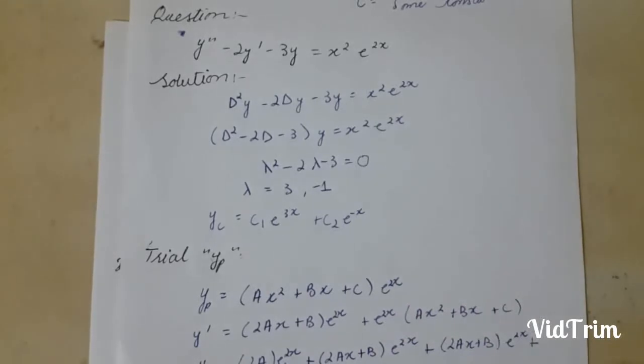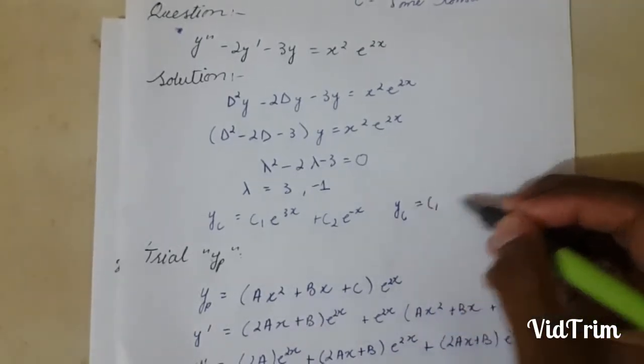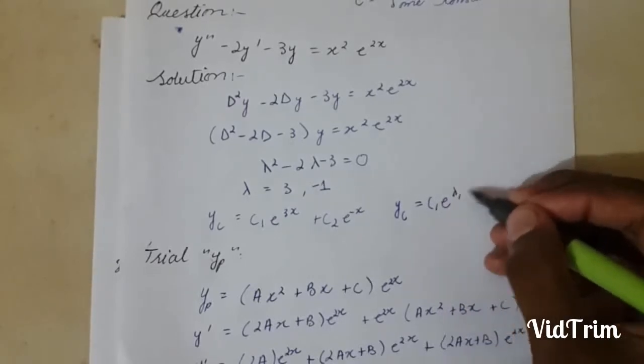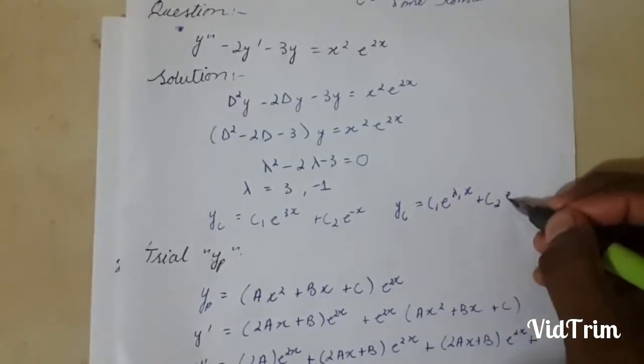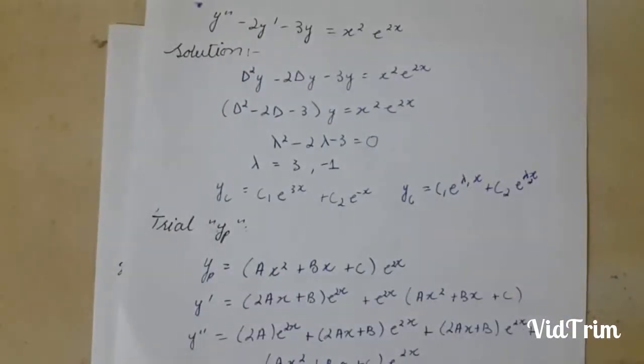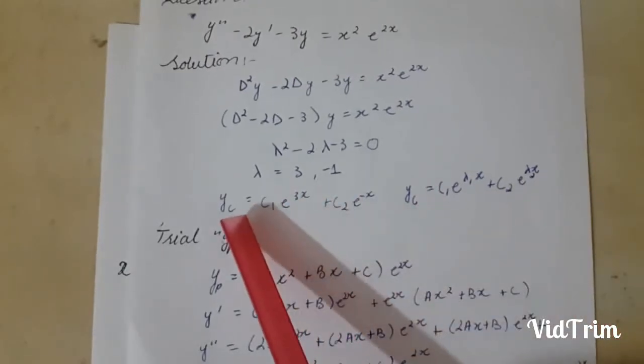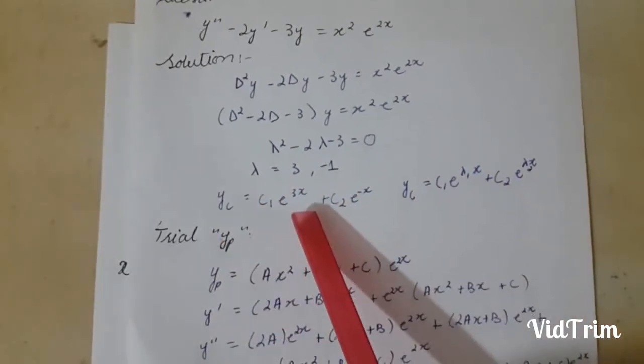Because we know that our yc equals c1 e^(lambda 1 x) plus c2 e^(lambda 2 x). Here I simply put the values of the roots and I got my yc. Now for yp.